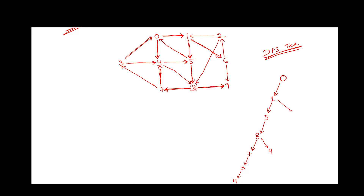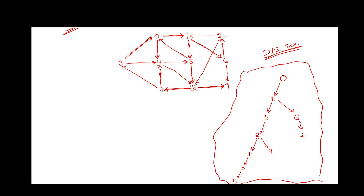From 1, there will be an outgoing edge to 6. From 6, there is an outgoing edge to 2. From 2, there is an outgoing edge to 1, but 1 is already been explored. This will be the DFS tree when we start with node 0.